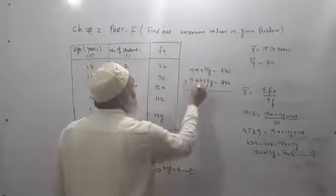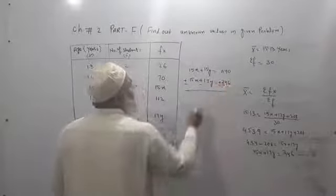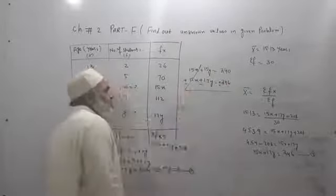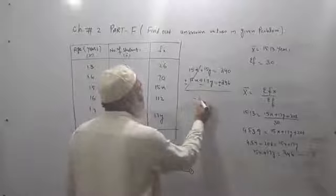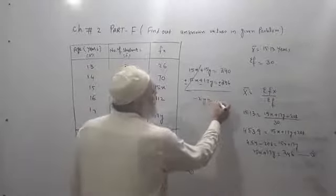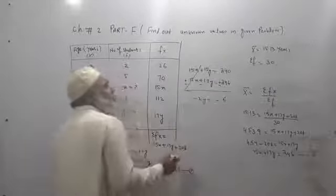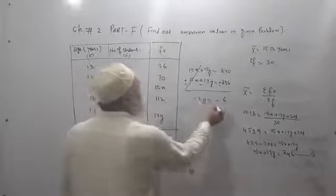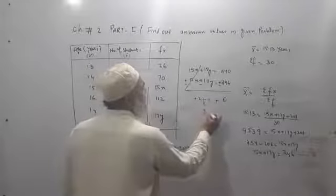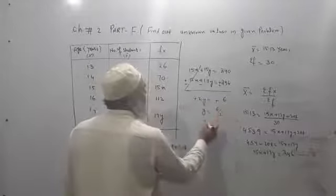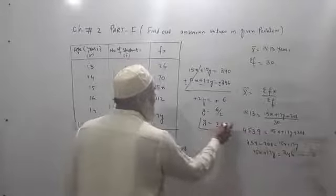Now we have to subtract both. We will change their signs. This will be cancelled. Now plus minus is minus, so minus 2y equals minus 6. Both sides divided by minus 2. So y equals 6 over 2, y equals 3. This is the value of y.